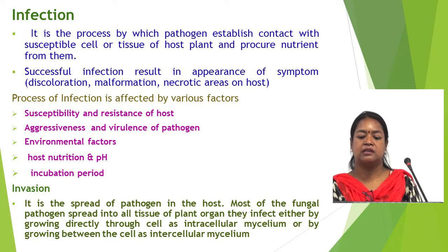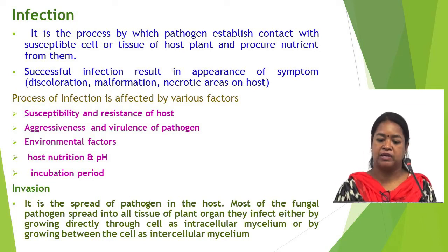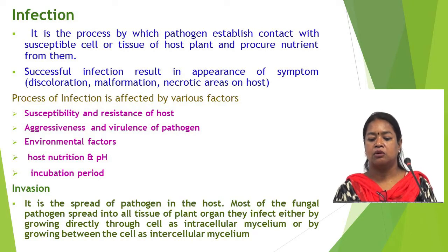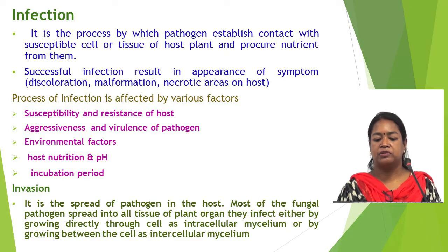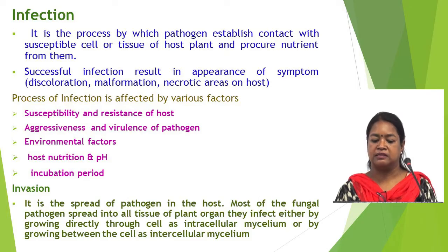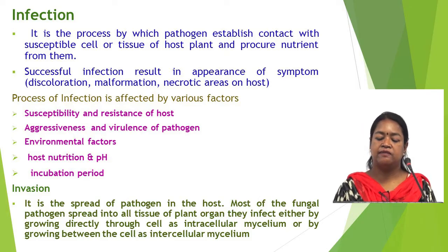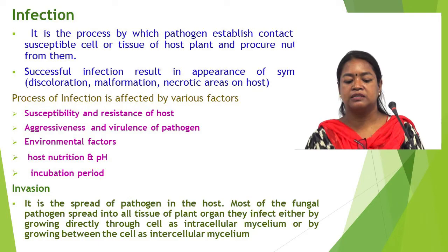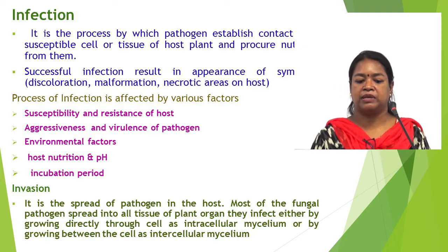After penetration, the next event is infection. In this process, the pathogen establishes contact with the susceptible cell or tissue of the host and procures nutrients from them. Successful infection results in the appearance of symptoms like discoloration, malformation, and necrotic areas on the host. The process of infection is affected by various factors such as susceptibility and resistance of the host, aggressiveness and virulence of the pathogen, environmental factors, host nutrition, pH, and incubation period.